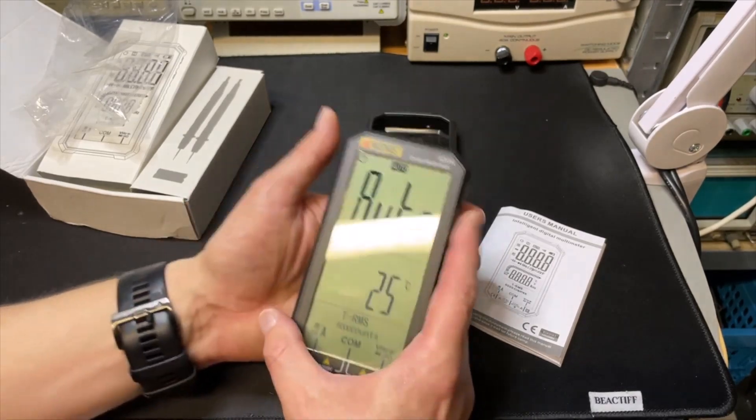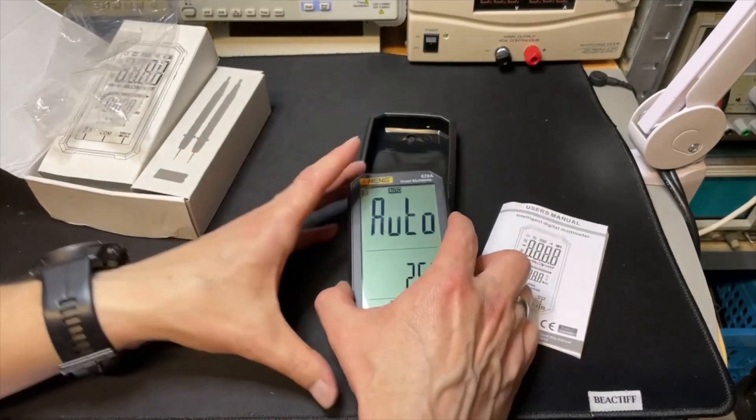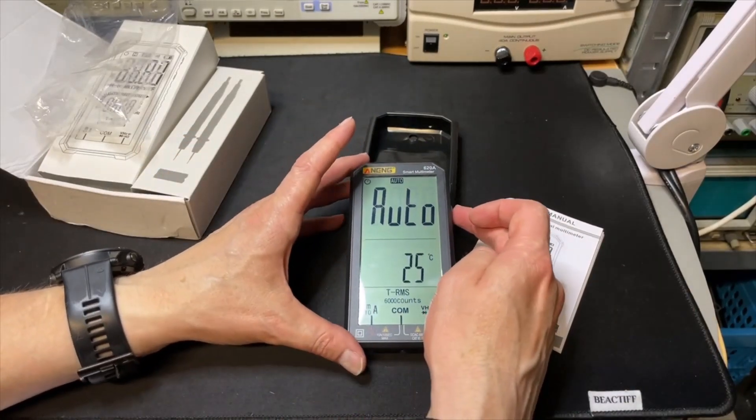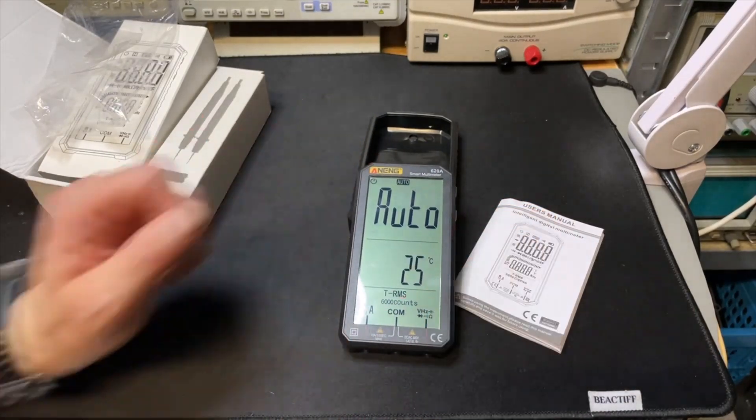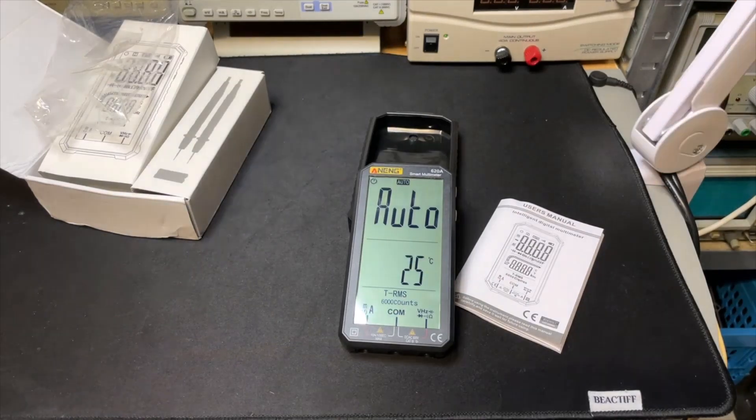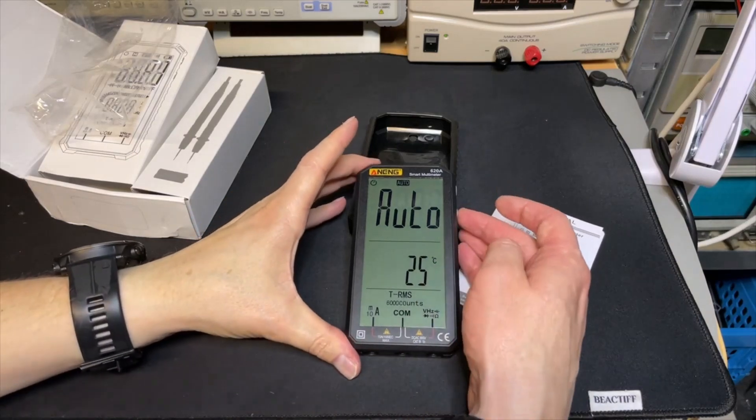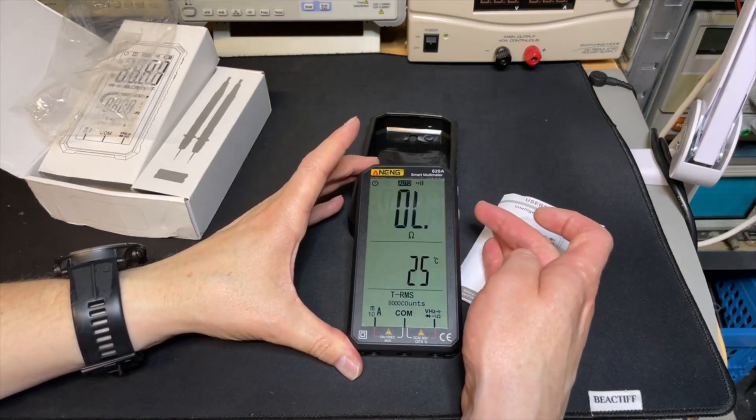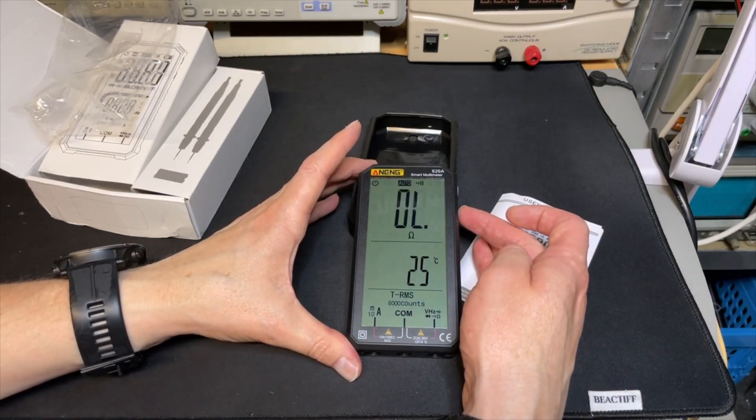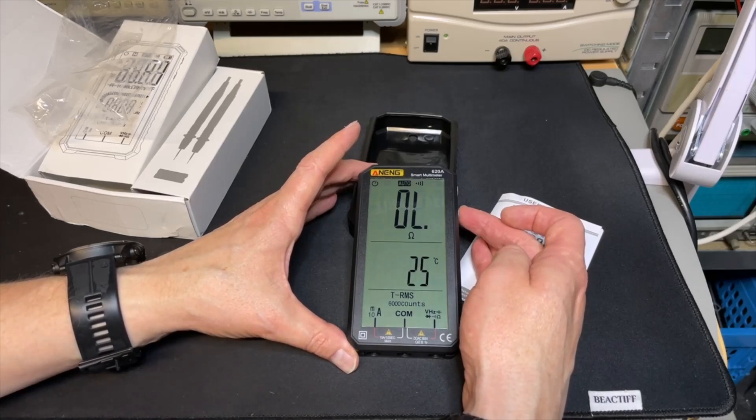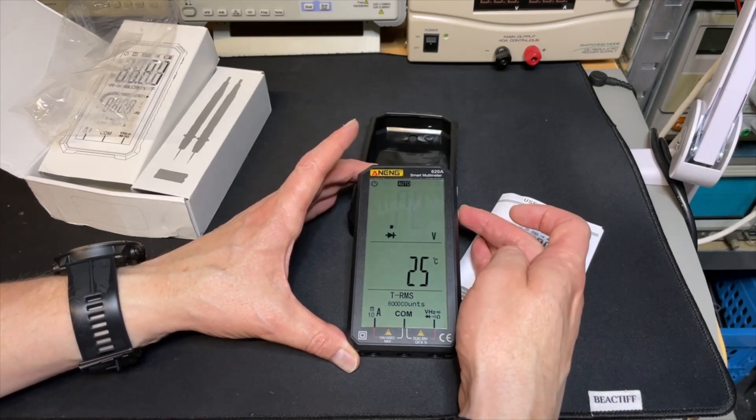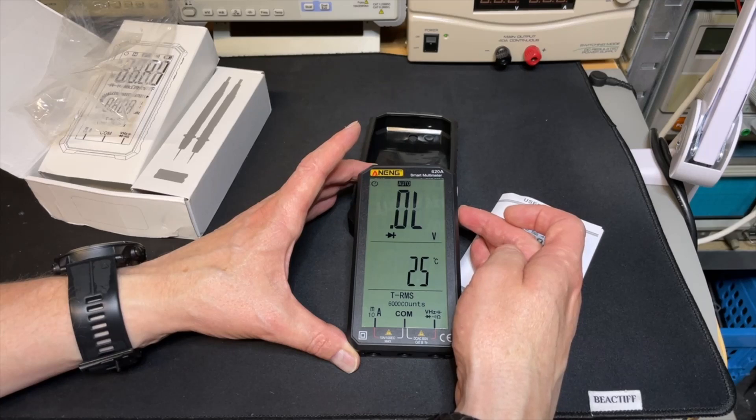There is a hold option, there is a light, there is a selection, and there is an NCV. If we put the selection, I'm not that convinced by the light. Now it's manual, it is set to ohms, so we can put our calibrator.